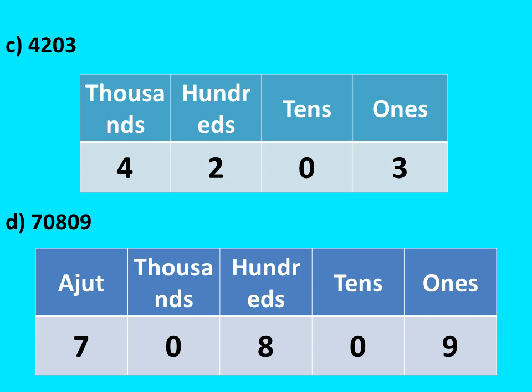Number d: 70,809. Ones place is 9, tens place is 0, hundreds place is 8, thousands place is 0, ten-thousands place is 7. So that gives 70,809.